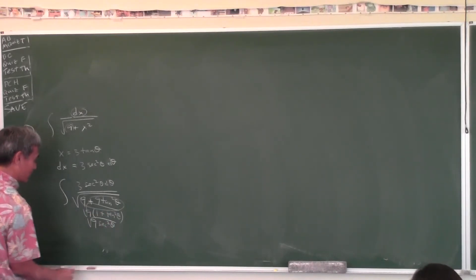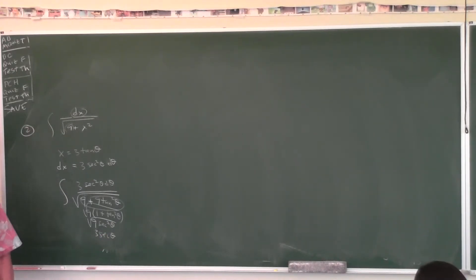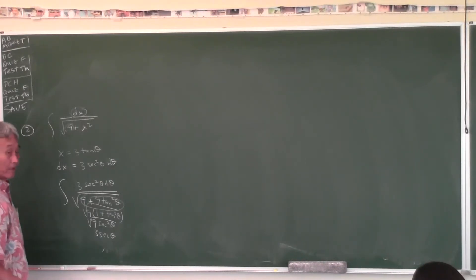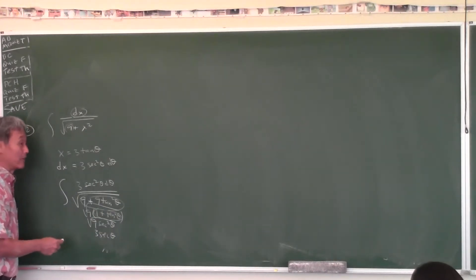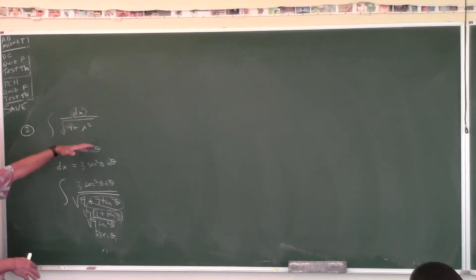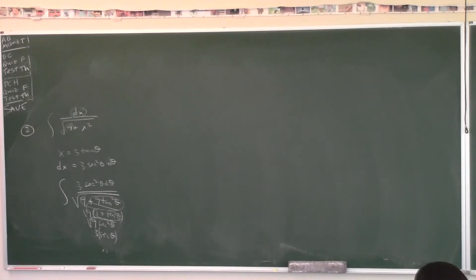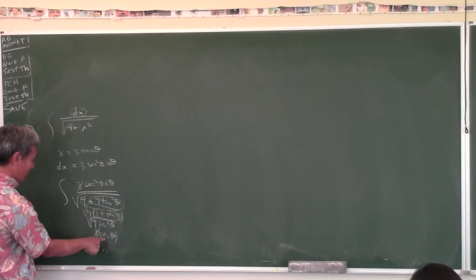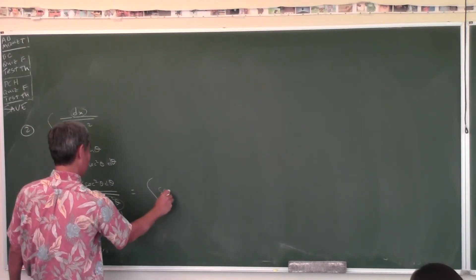The antiderivative of sec θ is ln|sec θ plus tan θ| plus C. But if the original problem has X's in it, the answer must have X's. So you have to change back to X's using a triangle, just like u-substitution.